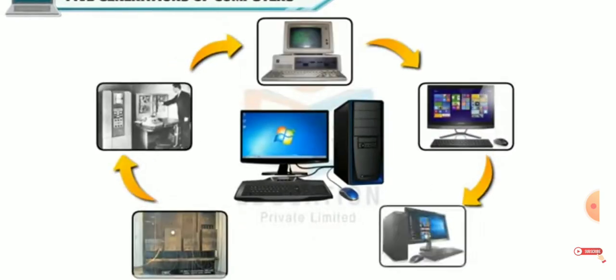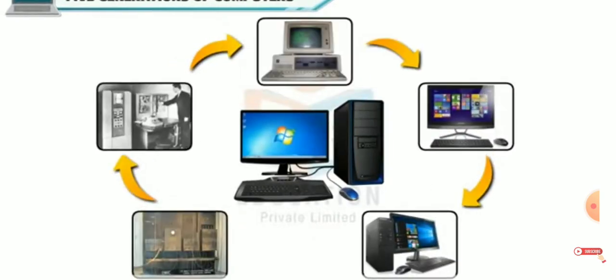The evolution of computers occurred in stages which are called generations. So there are five generations of computers that have been identified, starting from the most primitive to the most advanced.